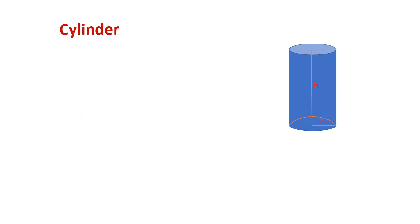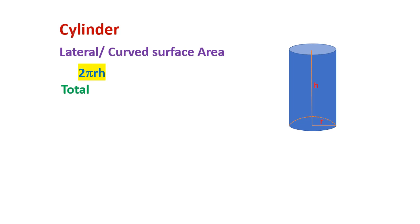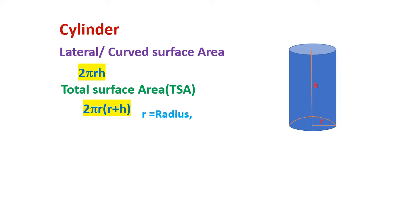Cylinder: curved surface area 2 pi r h, total surface area 2 pi r into r plus h, where r is radius, h is height, volume pi r square h.